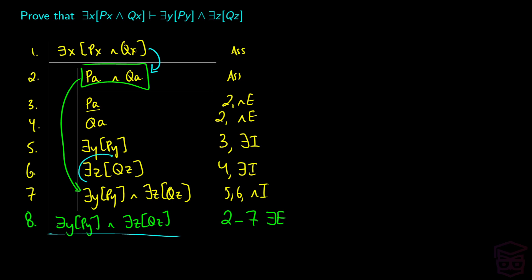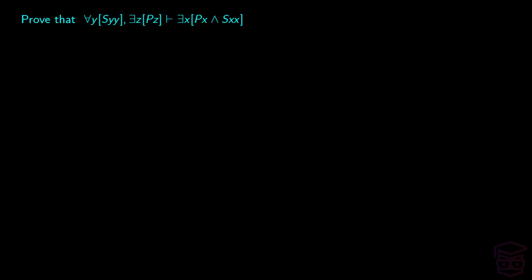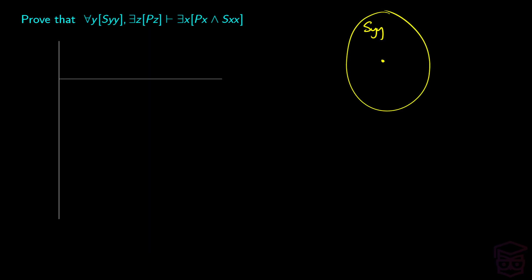We didn't have to do both of those inside the same sub-proof. We could have done one sub-proof to get exists y, P(y), and then another sub-proof to get exists z, Q(z), and then compounded them together outside. That would have been fine — I just wanted to make the proof shorter. Now let's prove that for all y, S(y,y), and there exists a z such that P(z), means there exists an x such that P(x) and S(x,x). Intuitively, everything satisfies S(y,y), there's something that is P(z), so there's going to be something that is both — and since we know this is true, we should be able to construct the argument.